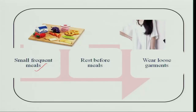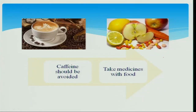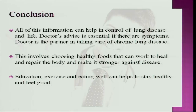Patients should be given small, frequent meals with rest before meals and helped to wear loose garments to reduce breathing difficulty. Caffeine should be avoided because it stimulates the gastrointestinal system. Medicines should be taken along with food, because if not, they will increase acidity in the stomach and further increase breathing distress. Proper diet, following the doctor's advice, and collaboration between the doctor, dietician, and patient are essential to managing the illness.